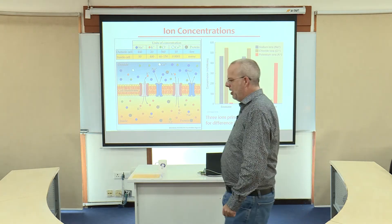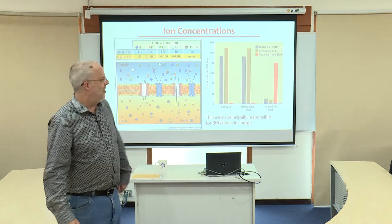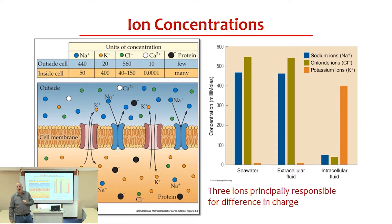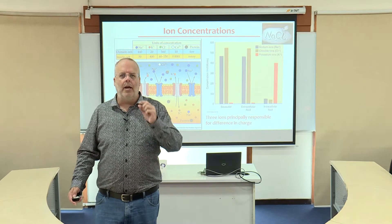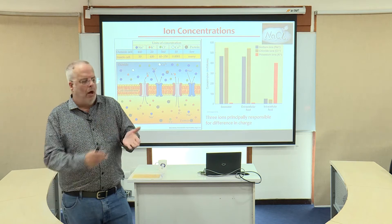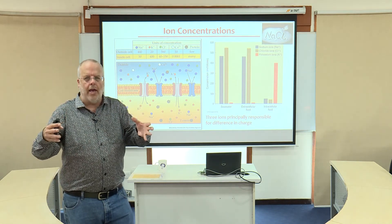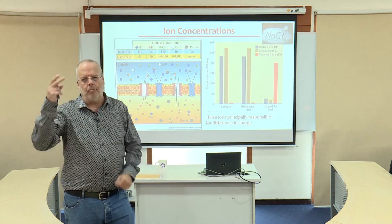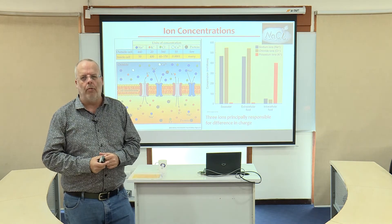We can graph this: intracellular — inside the neuron — we have high levels of potassium and low levels of sodium and chloride. In the extracellular space between the neurons, we have low levels of potassium but high levels of sodium and chloride. What is sodium chloride? It's salt. All terrestrial life, all life on land — in the ancient past we emerged out of the oceans, and in some respects we still carry that seawater around with us inside of our heads.